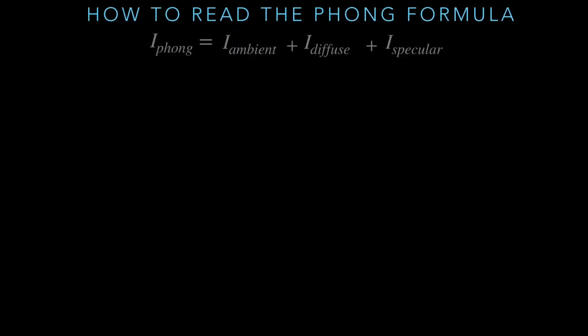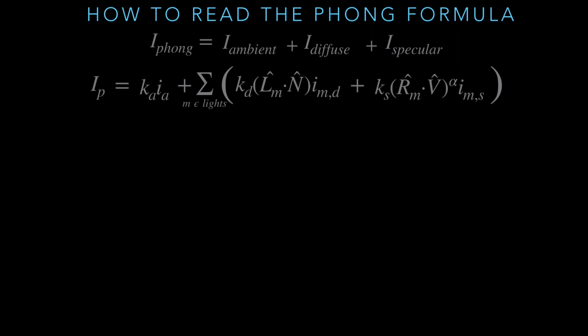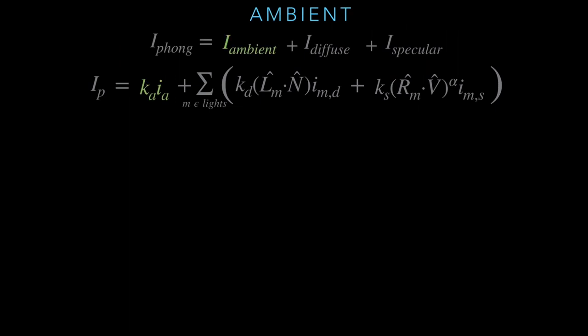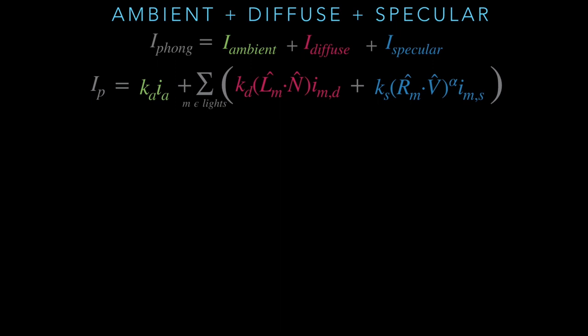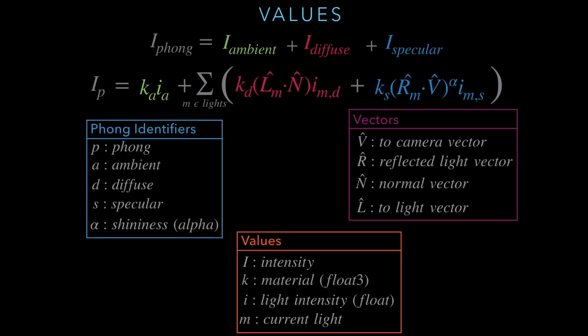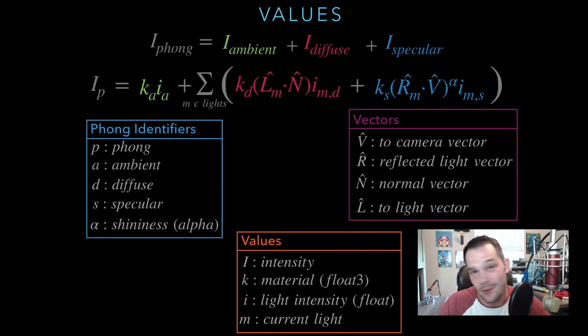Now that we have all six math concepts, let's look at how to read the Phong formula. Phong intensity equals ambient intensity plus diffuse intensity plus specular intensity. Looking at the full formula, ambient is located in one section, diffuse in another, and specular in the third. I've given you the identifiers, values, and vectors on screen — you could try implementing it in a shader yourself, or wait for the upcoming ambient, diffuse, and specular videos.